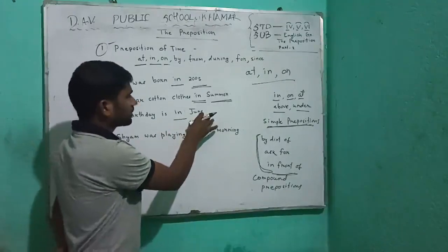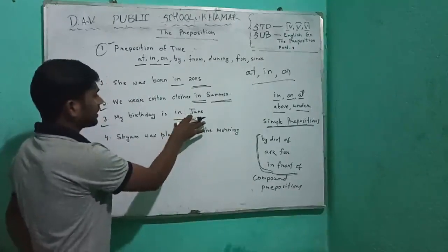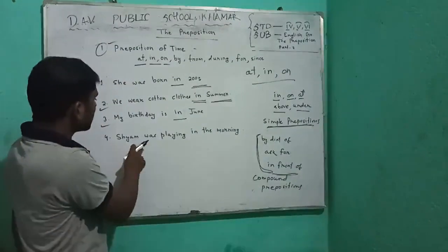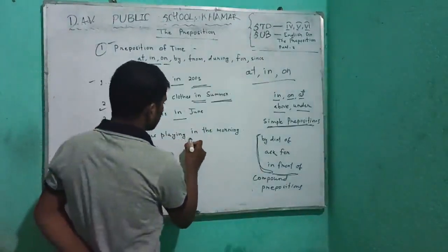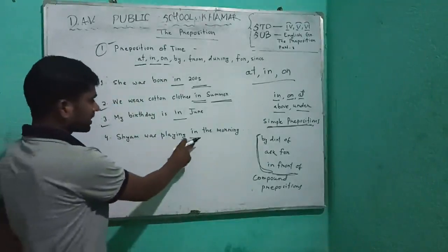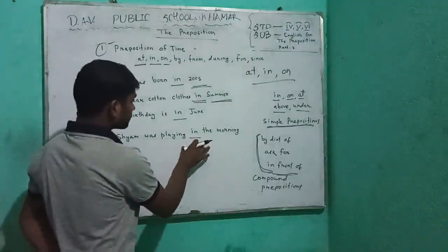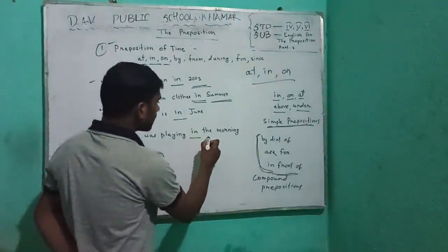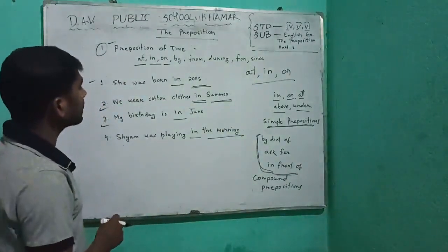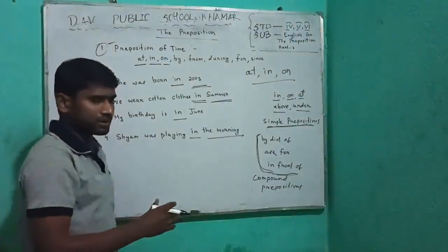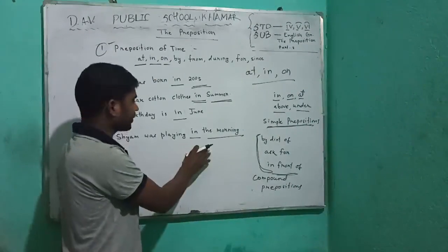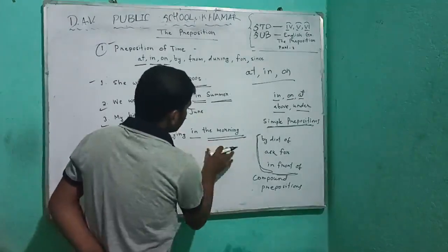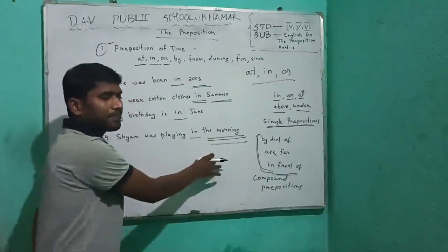The third sentence: 'My birthday is in June.' Here 'in' is the preposition, and it is telling us about a month — it indicates a month. Then in the fourth sentence: 'Sam was playing in the morning.' Here 'in' is the preposition. This sentence is also telling us about time — specifically, it is telling us about a part of a day: in the morning.